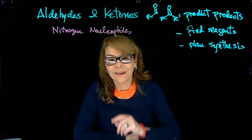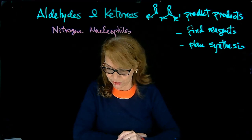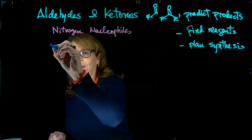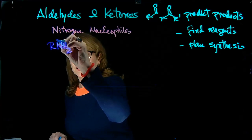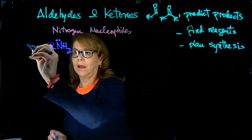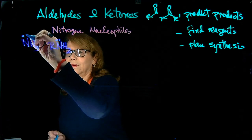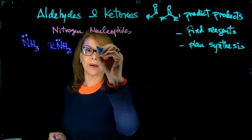We're going to study now reactions of aldehydes and ketones with nitrogen nucleophiles. These nucleophiles are nitrogen nucleophiles, say primary amines. Remember that in amines, if you think ammonia and replace one of the H's by an R group, you have a primary amine.